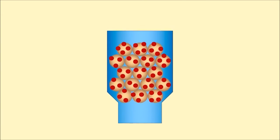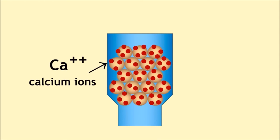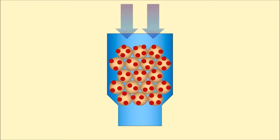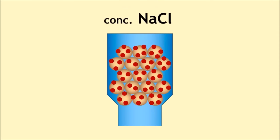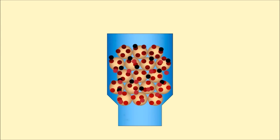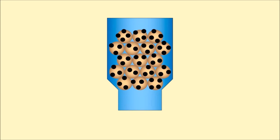Obviously, after a time the resin gets full of calcium ions and you have to reactivate it. To do this you pour concentrated salt solution — sodium chloride solution — at a very high concentration, high enough to reverse the reaction. The calcium chloride comes out in solution, and the column is again full of sodium ions and ready for use.